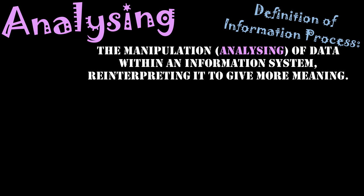To backtrack a little: collecting occurred first, where we enter data into the system. Then organizing occurred, where data entered into the system has been arranged in a specific format. Now we are analyzing — turning that data that's in the system into information.